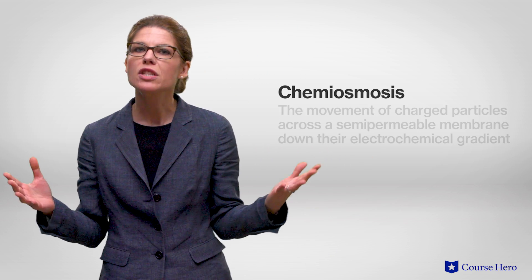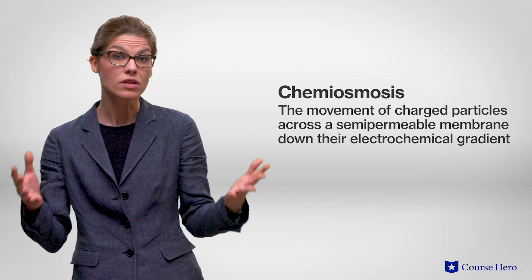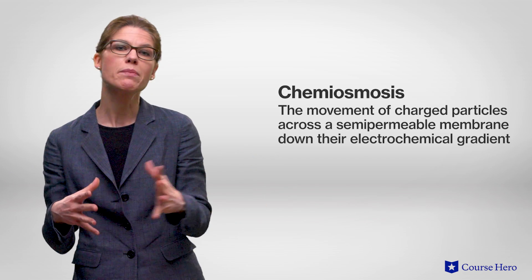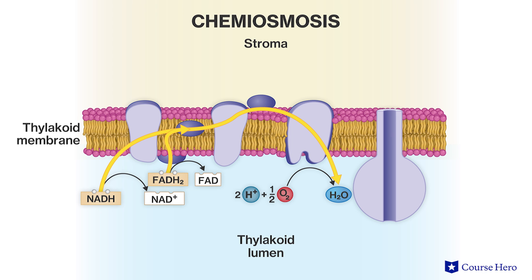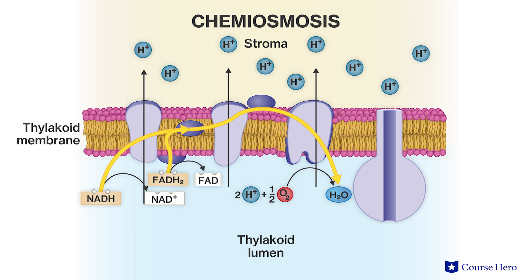Earlier we learned that the water splitting reaction that takes place in photosystem II results in the pumping of protons to the thylakoid lumen. This then results in the production of ATP by chemiosmosis. Chemiosmosis is the movement of charged particles — protons in this case — across a semipermeable membrane down the electrochemical gradient. This chemical potential is used by the enzyme ATP synthase, found in the thylakoid membrane, to generate ATP from ADP.